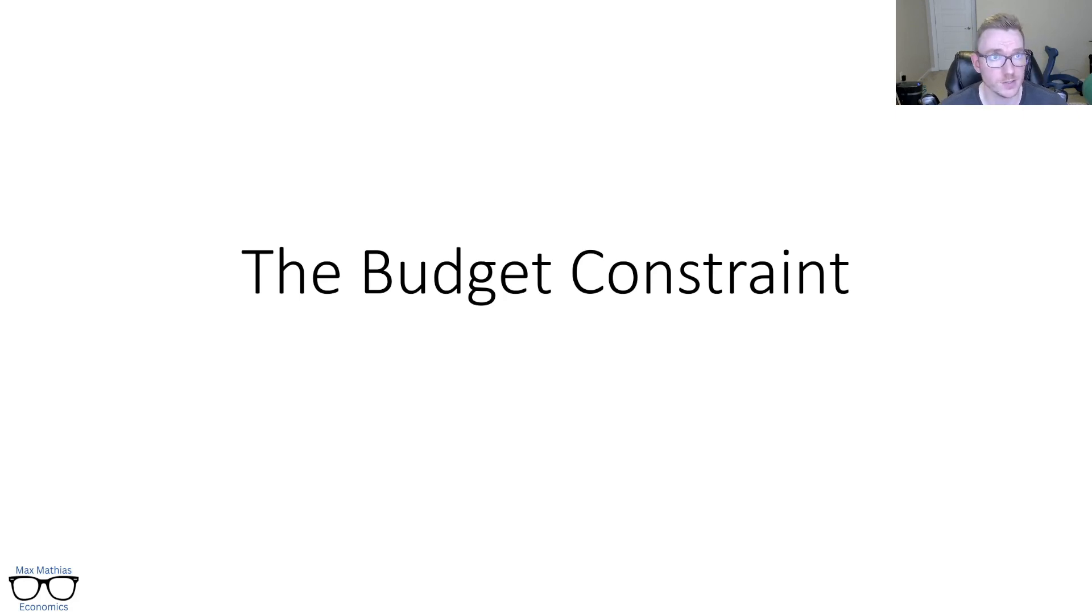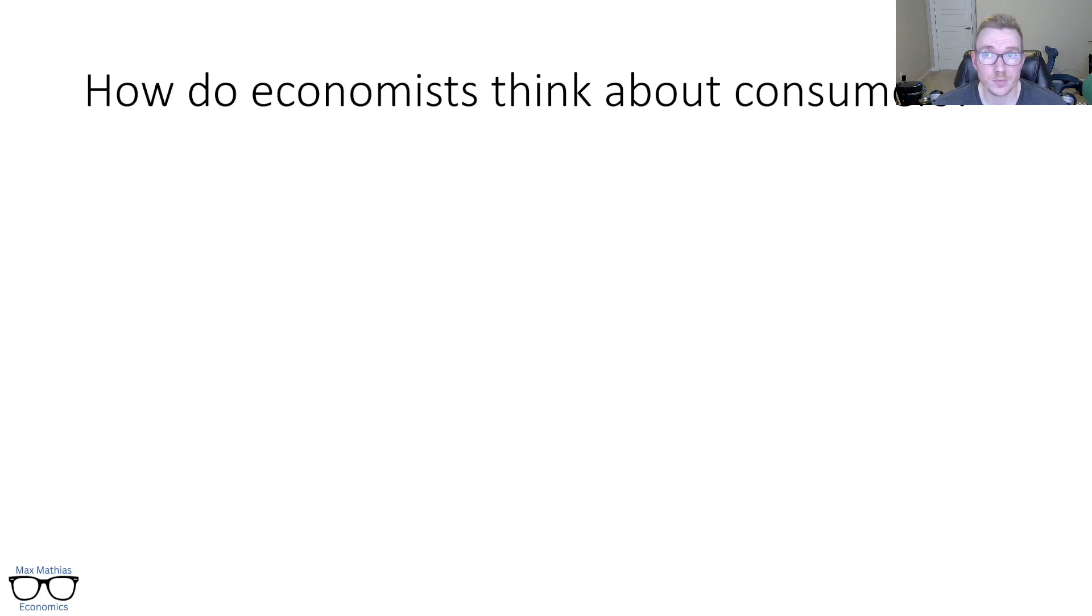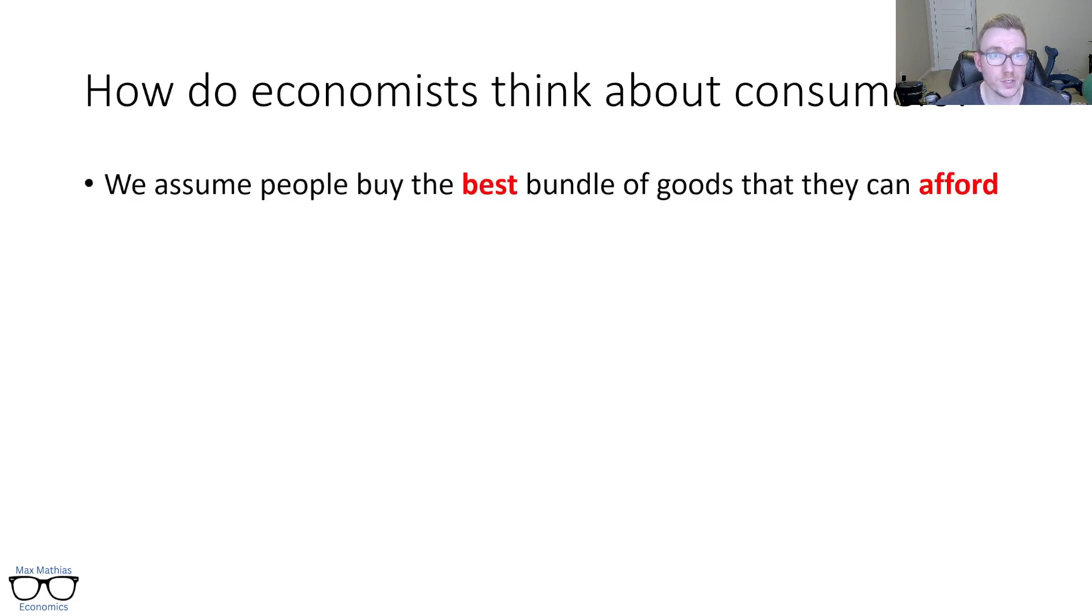So to revisit this or to talk about it, how do economists think about consumers? Well, we assume people buy the best bundle of goods that they can afford. And in this video, I am going to be talking about the that they can afford aspect of that statement. I have a video on preferences, which basically explains our first kind of step of how we think about what is best. These will get combined in many ways in future videos, but this is kind of breaking these down into their component elements to start.